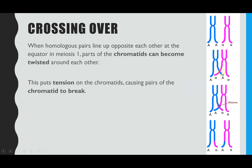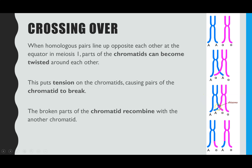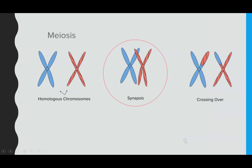That tangling puts tension on the chromatids, causing part of a chromatid to snap and break off. Where they break off, they recombine — often on the other chromosome of the pair — meaning the two chromosomes swap sections of their chromatids. This results in a new combination of alleles on each chromatid: for example, dominant A paired with recessive a in a new arrangement. As a result, the gametes end up with new combinations of alleles.